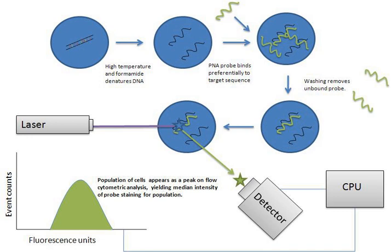The data generated by flow cytometers can be plotted in a single dimension to produce a histogram, or in two-dimensional dot plots or even in three dimensions. The regions on these plots can be sequentially separated based on fluorescence intensity by creating a series of subset extractions, termed gates. Specific gating protocols exist for diagnostic and clinical purposes especially in relation to hematology. Individual single cells are often distinguished from cell doublets or higher aggregates by their time of flight, denoted also as pulse width. Plots are often made on logarithmic scales. Because different fluorescent dyes' emission spectra overlap, signals at the detectors have to be compensated electronically as well as computationally.